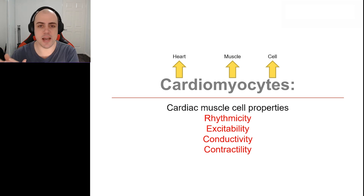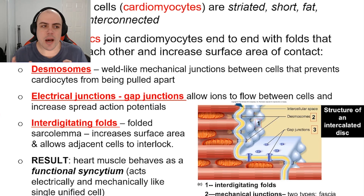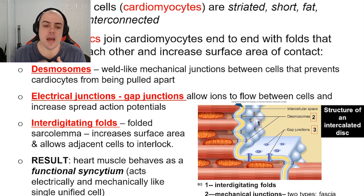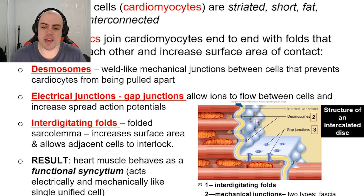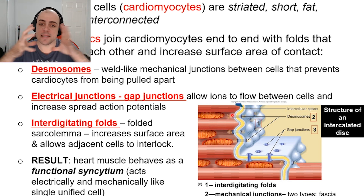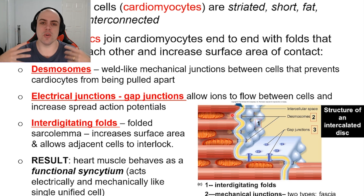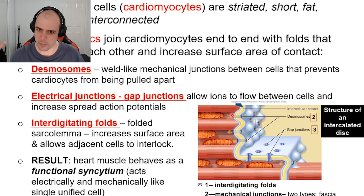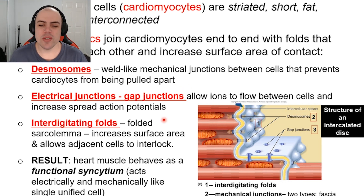There are a couple of key features you need to be aware of in terms of the microscopy of a cardiomyocyte. The first is desmosomes. Think of these almost like velcro — they are interlocking junctions that hold cells together. Because the heart is constantly beating and relaxing, the last thing we want is for the heart to rip itself apart, so desmosomes structurally reinforce and hold it together.